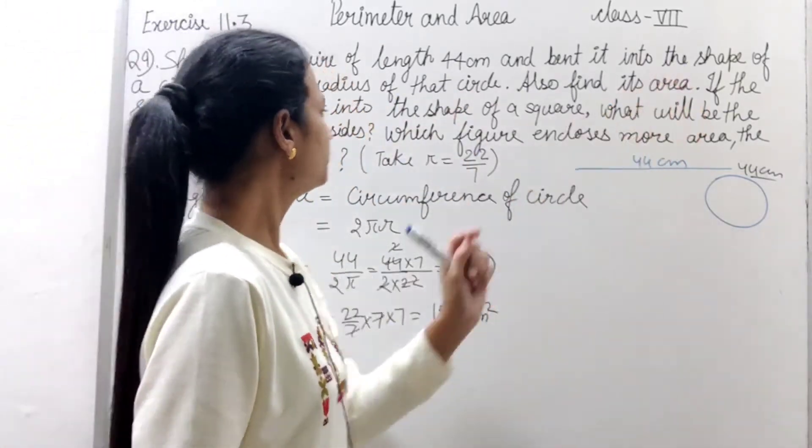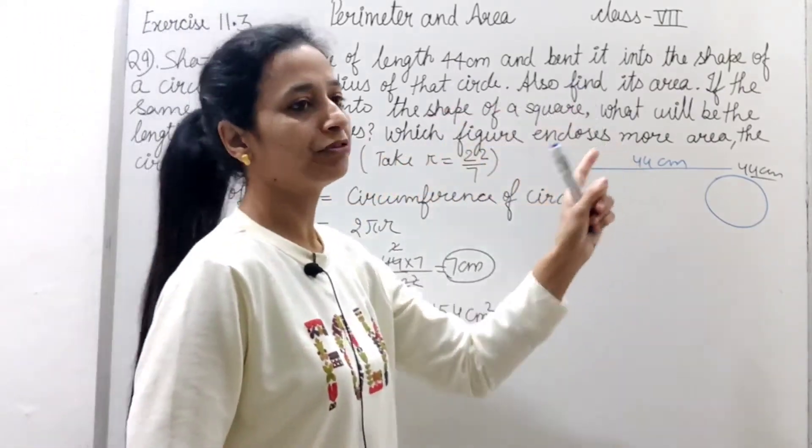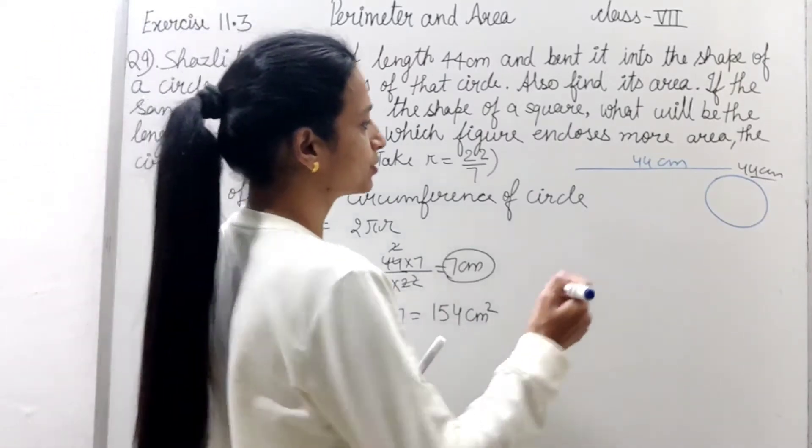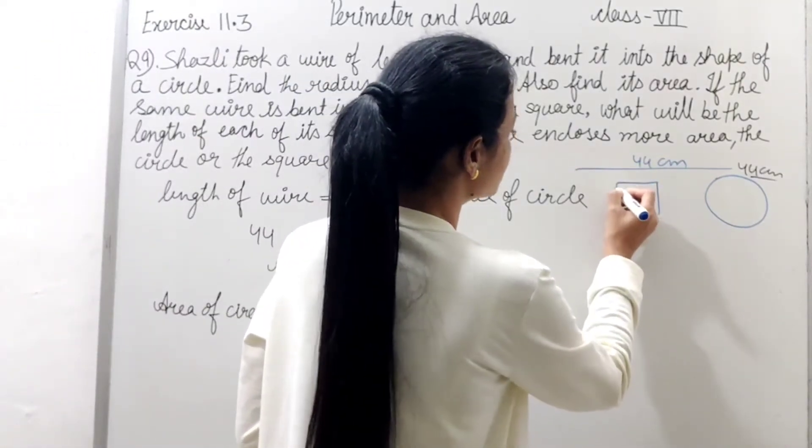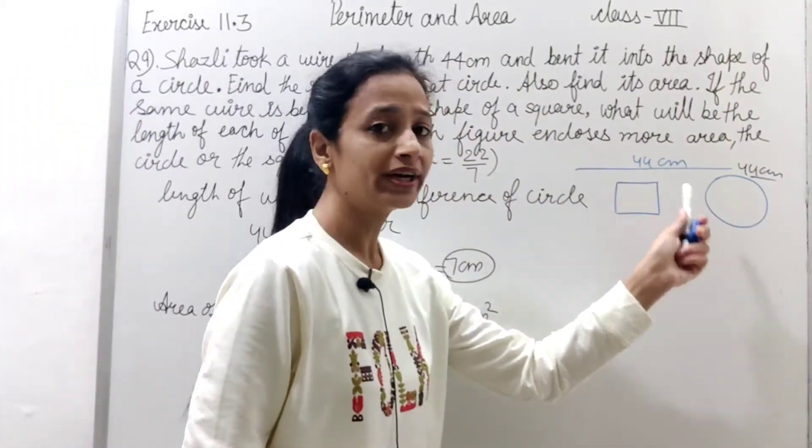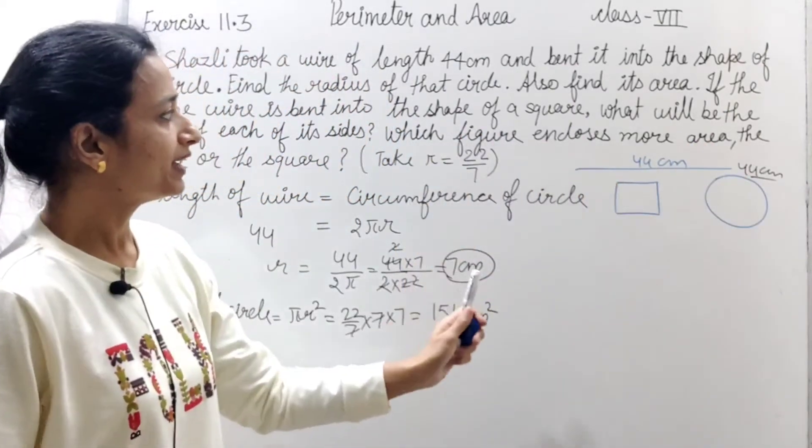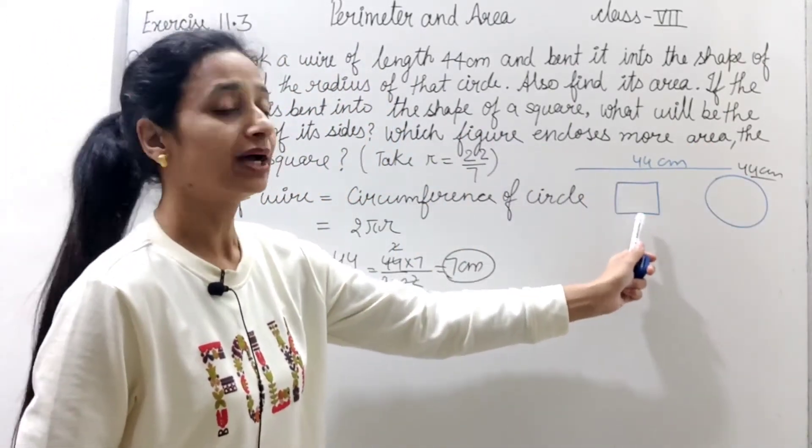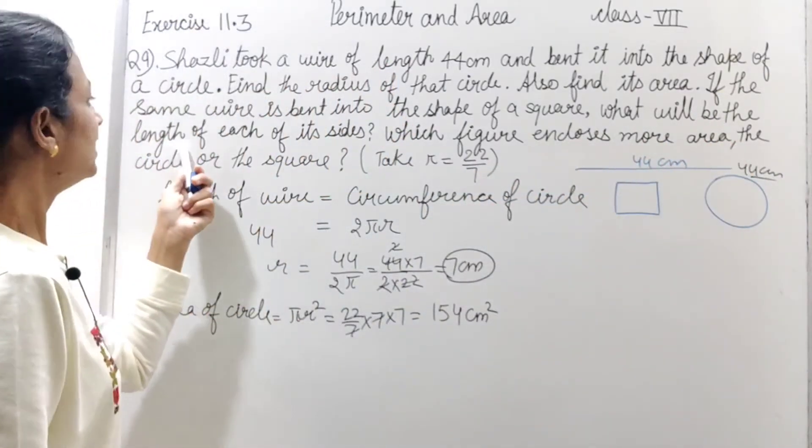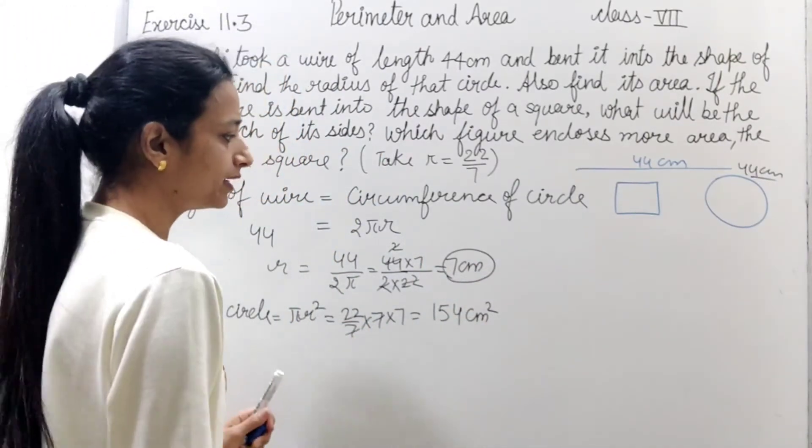Now, aage chalte hai. If same wire is bent into the shape of the square. Ab isi wire se bent karke usne kya bana diya? Isko ek square. To definitely is square ka perimeter kya ho jayega? Jo wire ki length hai. To wire ki length kya ban gayi? Perimeter. Ab aage usne humse kya puchha hai? What will be the length of each side? Kiski? Square ki.